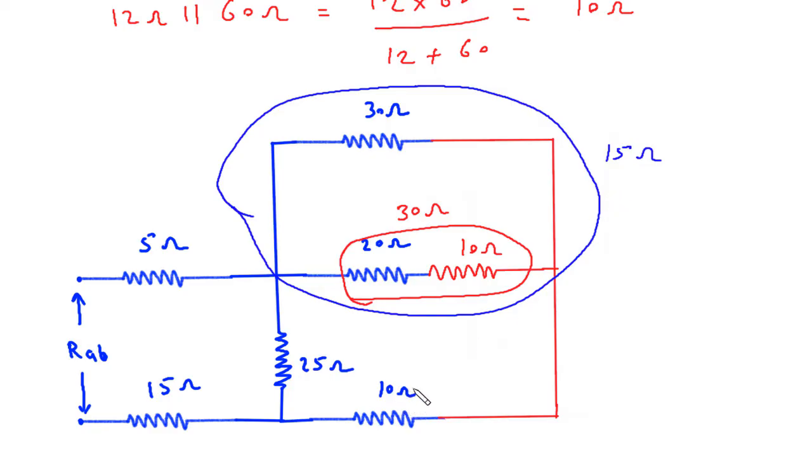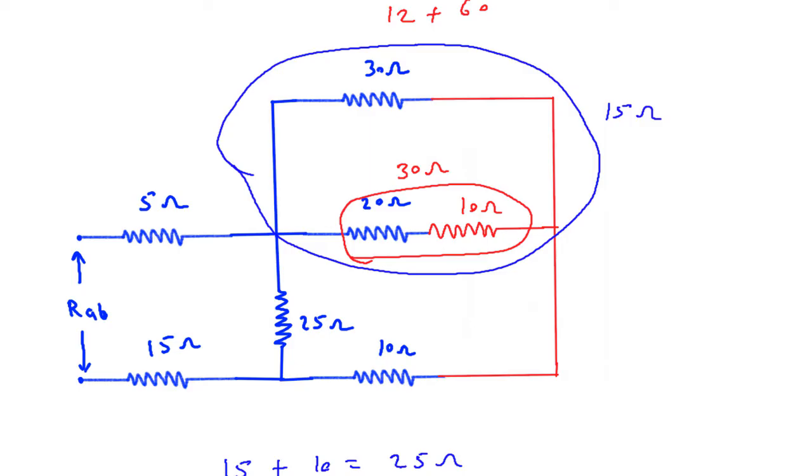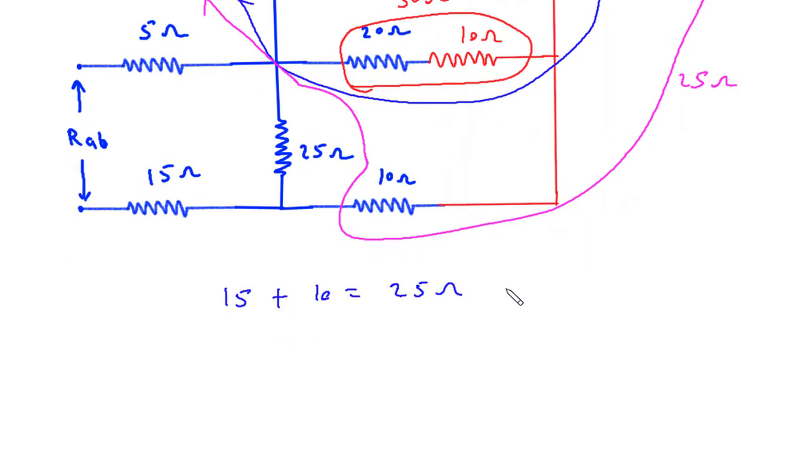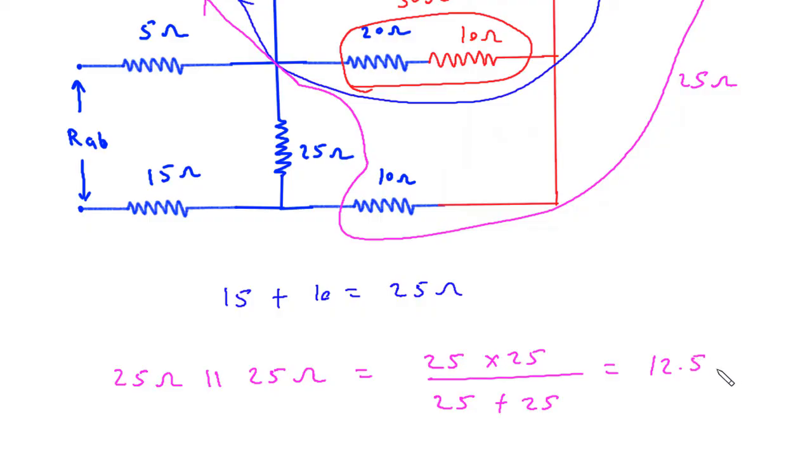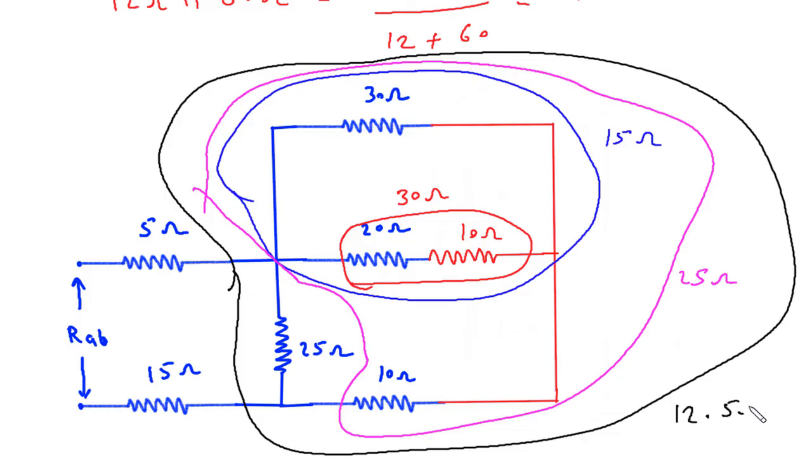Then this 15 ohm is in series with this 10 ohm, so 15 plus 10 is equal to 25 ohm. This whole will be 25 ohm. This 25 ohm is in parallel with this 25 ohm, so 25 into 25 divided by 25 plus 25, or simply 25 by 2, so it will be 12.5 ohm.